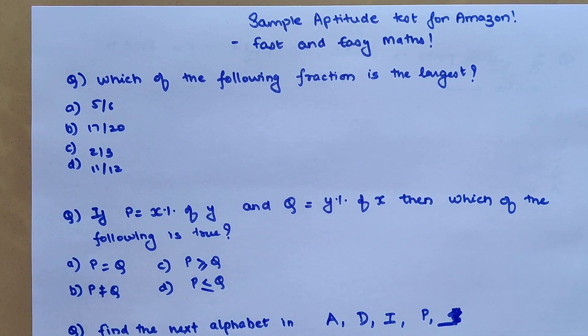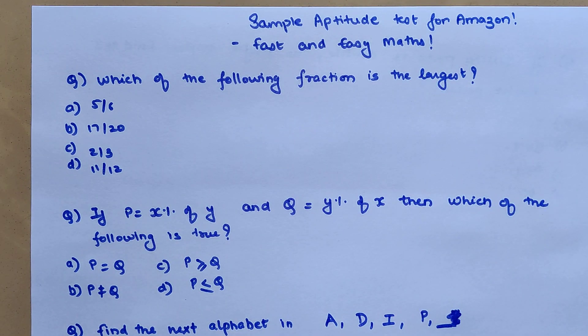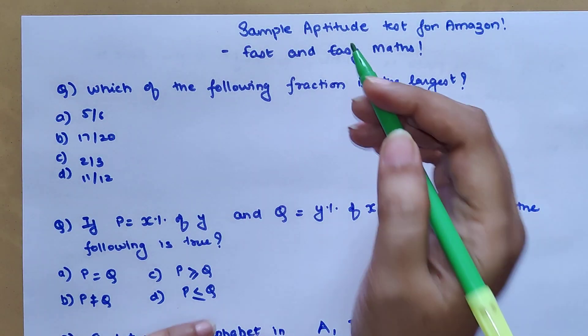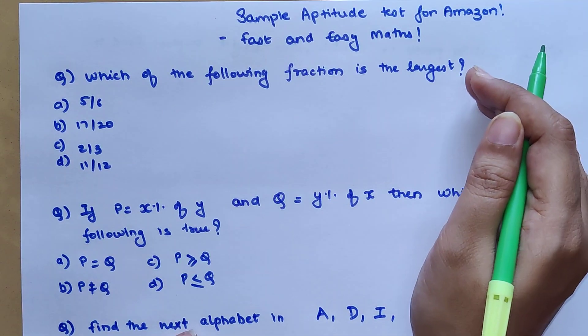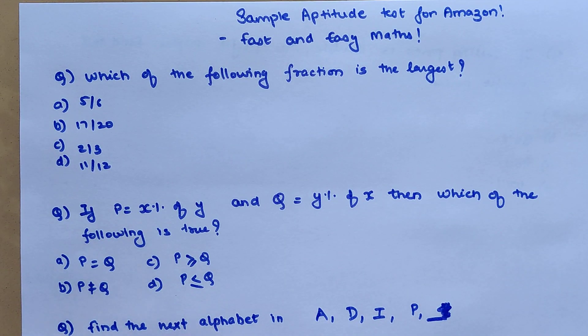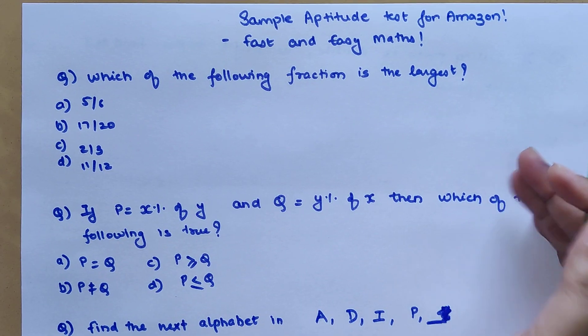Welcome everyone to my channel, Fast and Easy Maths, which is dedicated to give you tips and tricks related to mathematics. Today we are going to solve a sample aptitude test for Amazon. This normally happens in round two, and after this if you clear this round, then you are selected to go further and those further rounds will be interviews.